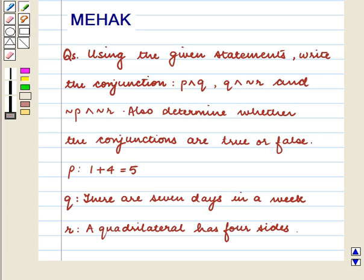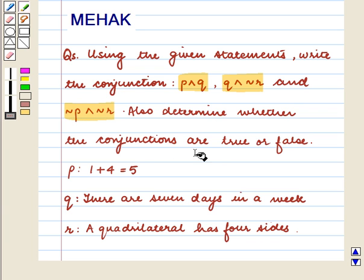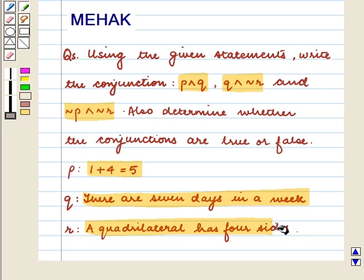Hello and welcome to the session. In this session we are going to discuss the following question: using the given statements, write the conjunction P and Q, Q and not R, and not P and not R. Also determine whether the conjunctions are true or false. Here P is 1 plus 4 equal to 5, Q is there are 7 days in a week, and R is a quadrilateral has 4 sides.